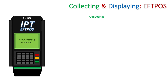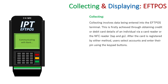Collecting involves data being entered into the EFTPOS terminal. This is firstly achieved through obtaining credit or debit card details, which are entered into the system via the card reader — the magnetic strip reader, which may also read a chip — or using the NFC reader for tap and go, where you don't even have to insert the card. After the card is registered by either method, the user selects their account and enters their PIN using the keypad buttons.